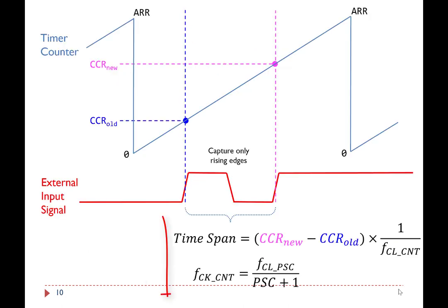In summary, software can use these two equations to calculate the time duration. The time duration equals the difference of two captured CCR values multiplied by the counter clock period.